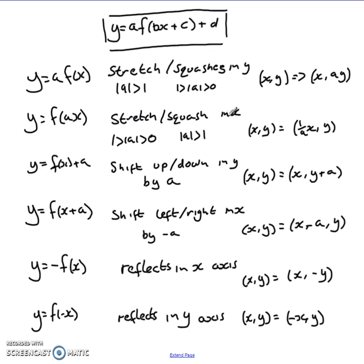Y equals f of ax stretches or squashes it in x, dependent on the size of a but it's the opposite to what the y was. If it's between 1 and 0 it stretches it in x, and if it's bigger than 1 it squashes it. Our points change from x, y to 1 over a times x comma y.